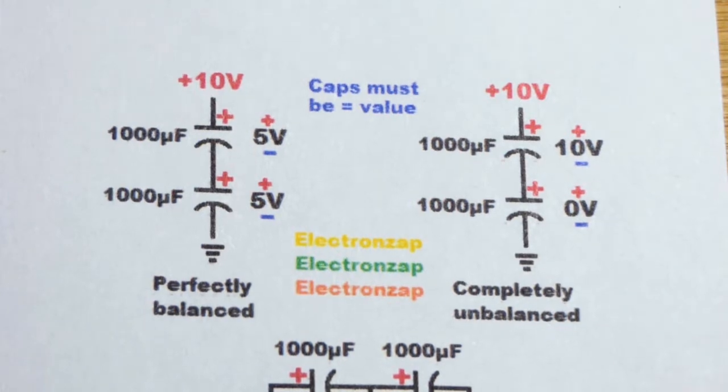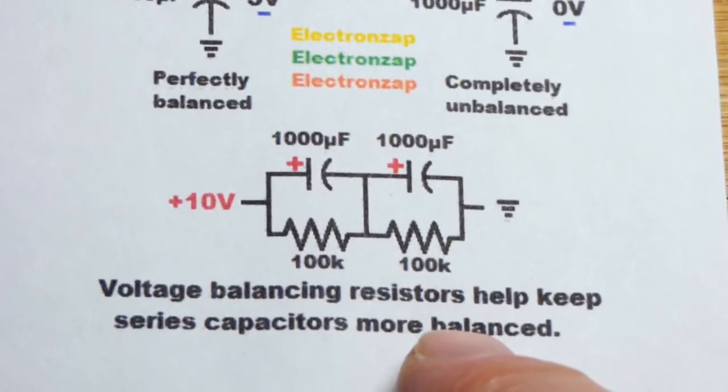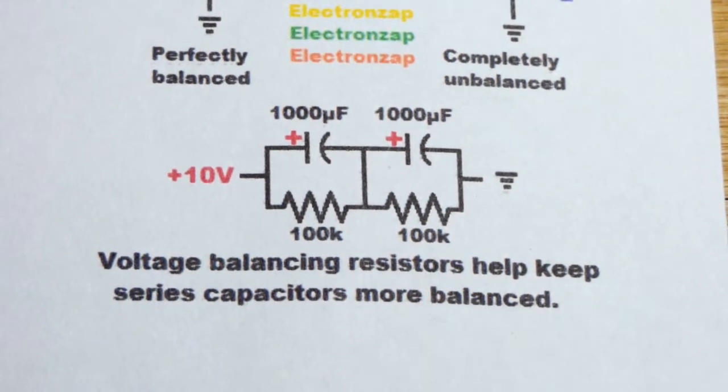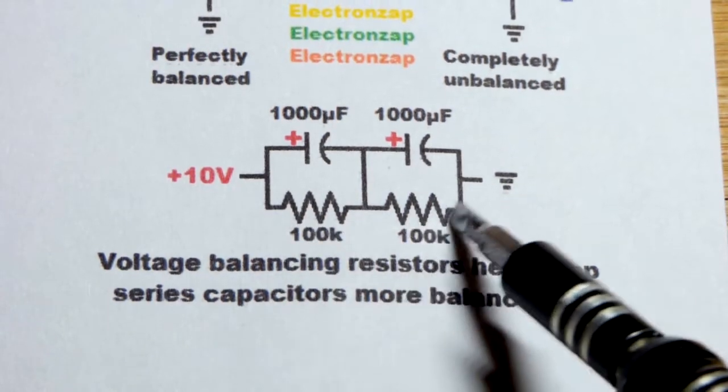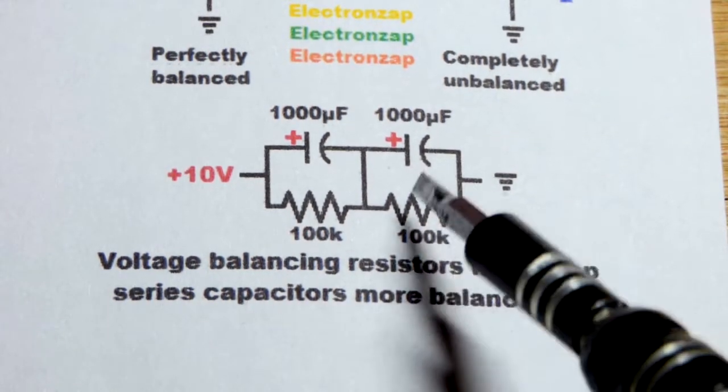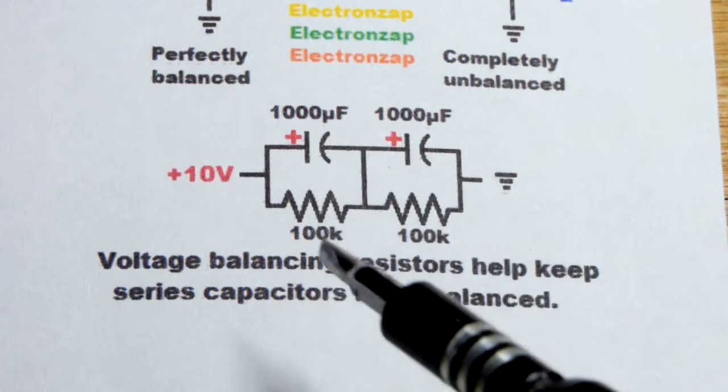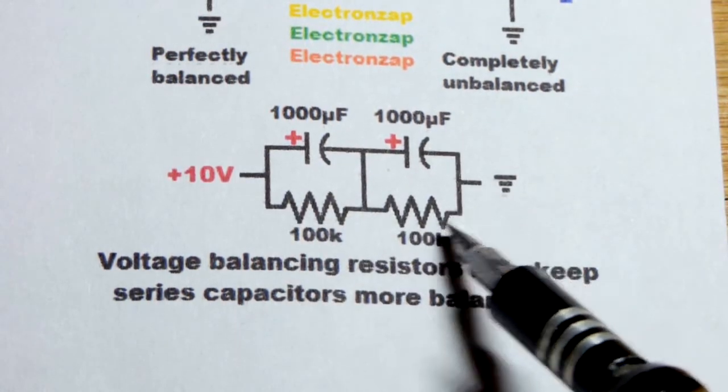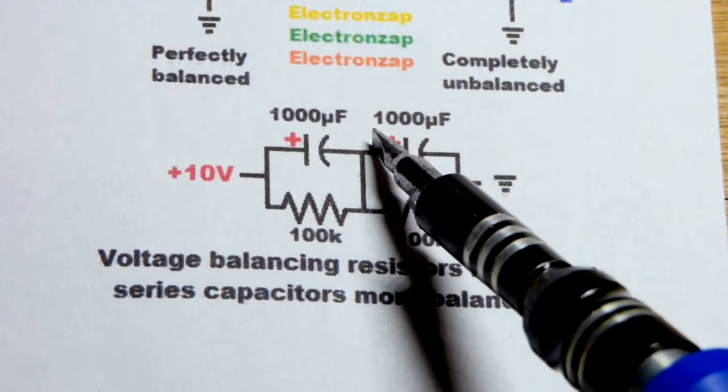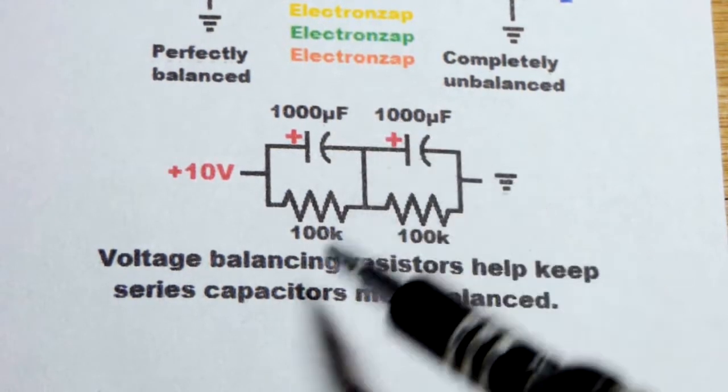So one way to prevent capacitors from becoming unbalanced, especially if there's going to be a charge across them for a significant period of time, is to put a couple resistors in parallel with each one of the capacitors right there. So the resistors are in series, they're a voltage divider, but they're parallel to the capacitors right there.